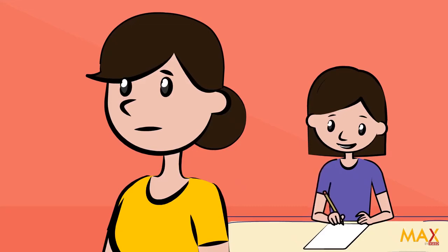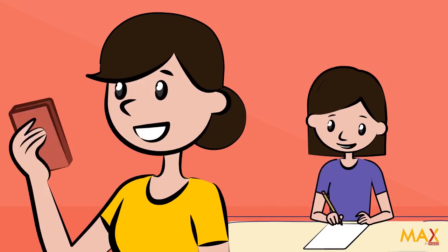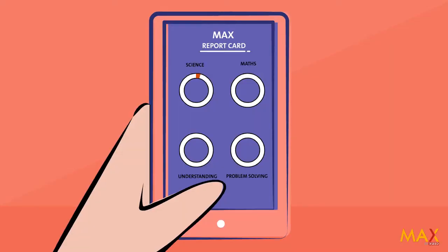Mrs. Torres is now used to receiving Max skill reports on her phone. It shows Nicole's understanding score and problem-solving score in math and science.